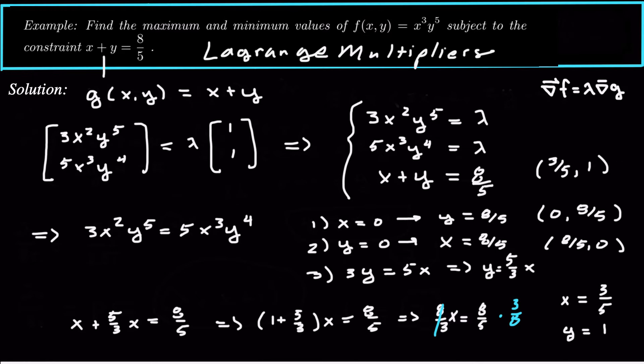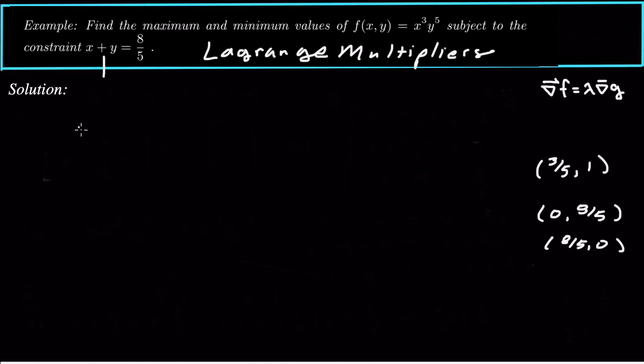And now we need to compare the function values for each one. All right, so we want to look at the function value f of 3 fifths, comma 1. So that would be plug this point, 3 fifths, comma 1, into this function. So we get 3 over 5 cubed, times 1 to the fifth. So that's going to be 27 over 125. So that's our first function value.